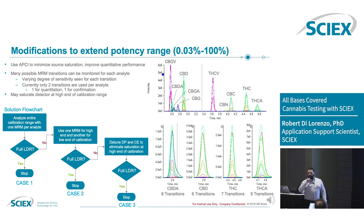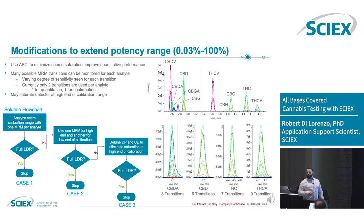You can use multiple different transitions for different linear portions of the curve. At the low end, use really sensitive transitions that fragment well and give you great signal. At the high end, to prevent detector saturation, you can use less abundant transitions and write custom calculations in the software to choose which transition to use in which portion of the curve.